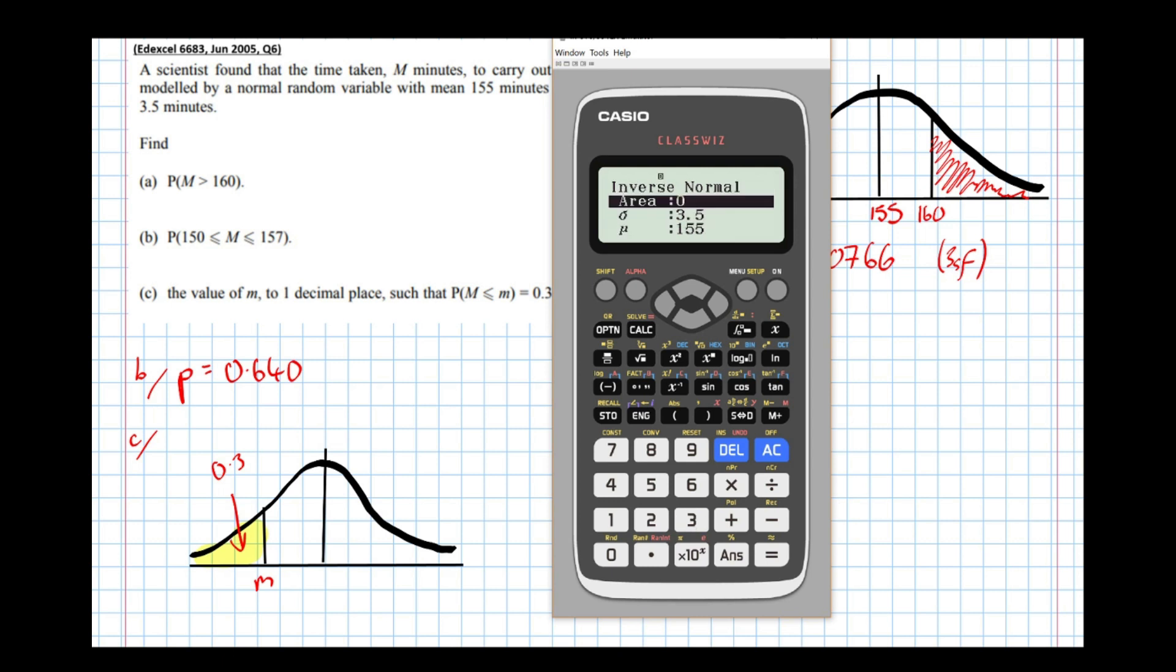Now the calculator here takes area to the left. It's important that you must put in the area to the left, not to the right. So the area to the left here is 0.3. Sigma is 3.5, Mu is 155. You get the answer 153.165.